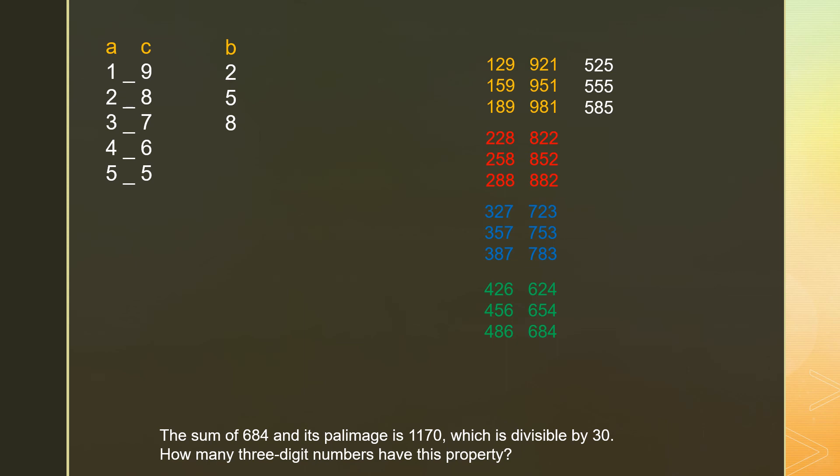So all together, we have 4 groups. Each group can make 6 numbers. So 4 times 6 plus 1 times 3. So all together, we can make 27 numbers.